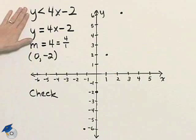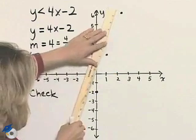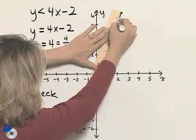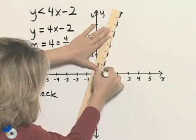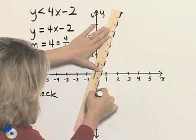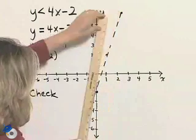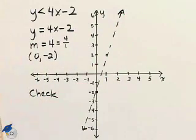Because this inequality is just strictly less than, our boundary line is going to be a dashed line, which indicates that the points on that line are not included in the solution.